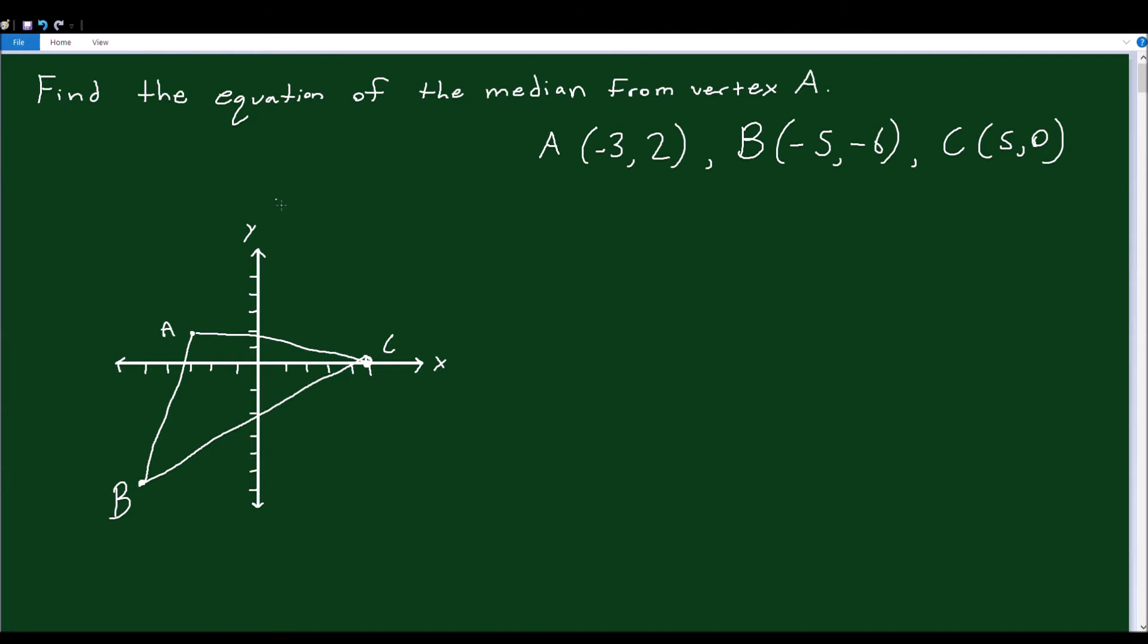So let's go back and look at the question. It said find the equation of the median from vertex A. So what that means is, starting at A, we have to find the equation of a straight line that goes from A to the midpoint of BC. So the midpoint of BC is probably somewhere here. So they want the equation of this line. I drew it as a dotted line here.